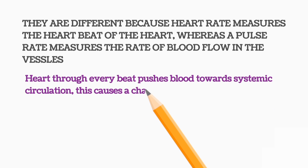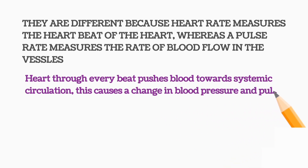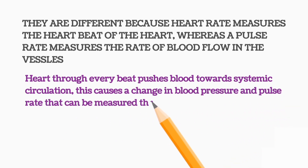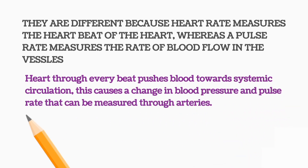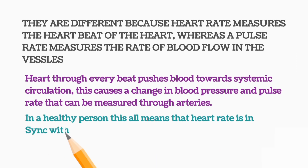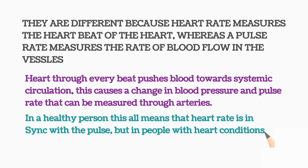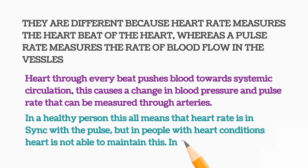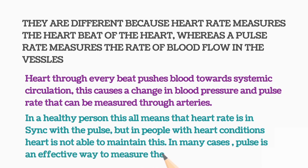The heart, through every contraction, pushes blood towards the systemic circulation. This causes a change in blood pressure and the pulse rate that can be measured through the arteries. In a healthy person, the heart rate is in sync with the pulse, but in people with heart conditions, the heart is unable to maintain this. In many cases, the pulse is an effective way to measure the heart rate.